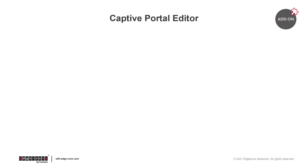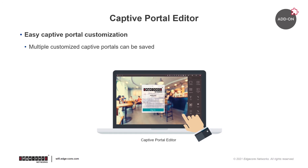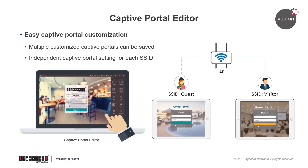With AuthPort, wireless clients are authenticated through Captive Portal. AuthPort also comes with a Captive Portal editor that will make customization of your Captive Portal so much easier. You can simply drag and drop components such as a text box or a YouTube video and just edit the parameters as desired. Then you can save multiple Captive Portals that you've customized for use. Since EC Cloud also supports independent Captive Portal settings for each SSID, each SSID can have its own unique Captive Portal.